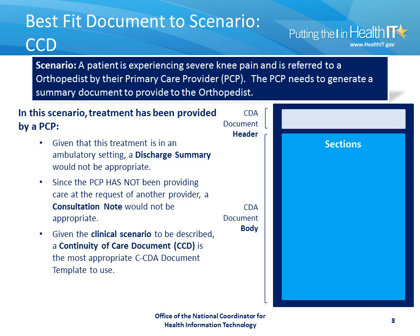In this scenario, treatment has been provided by a PCP in an ambulatory setting, so a Discharge Summary would not be appropriate. Since the primary care provider has not been providing care at the request of another provider, a Consultation Note would not be appropriate either. Given the clinical scenario to be described, a Continuity of Care document is the most appropriate CCDA document to use.